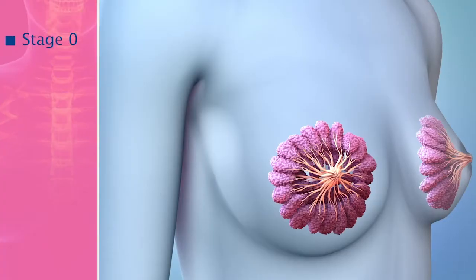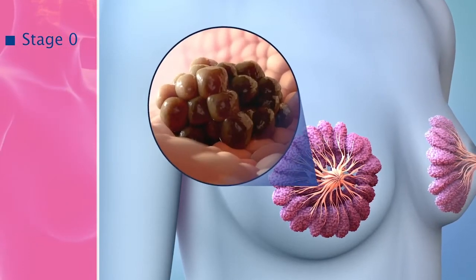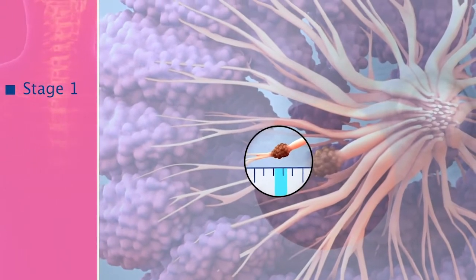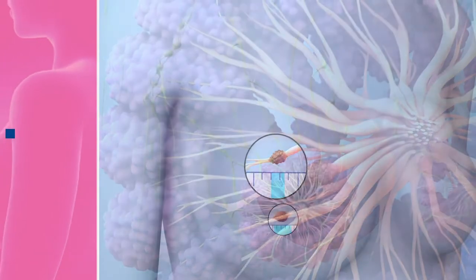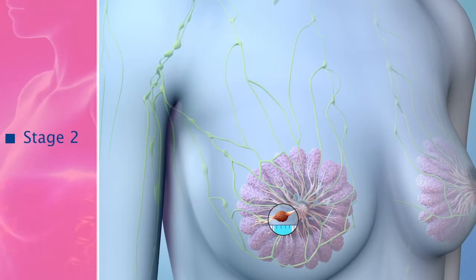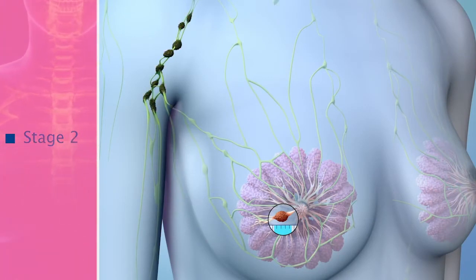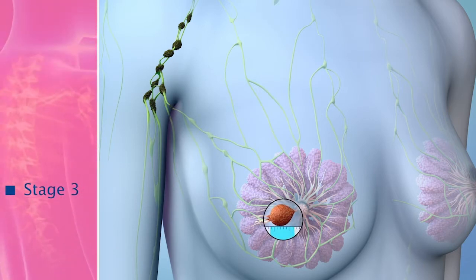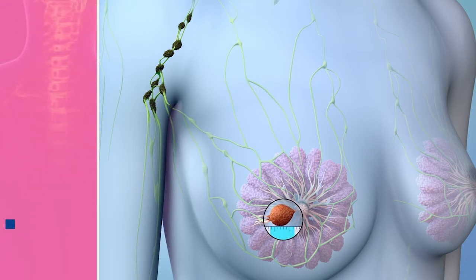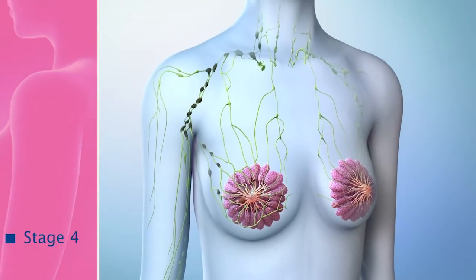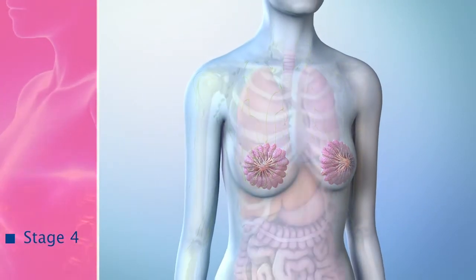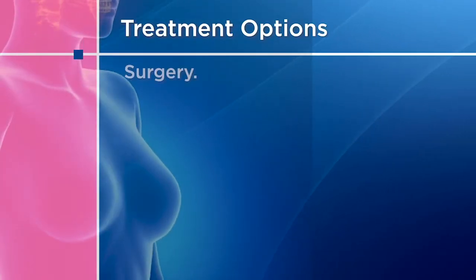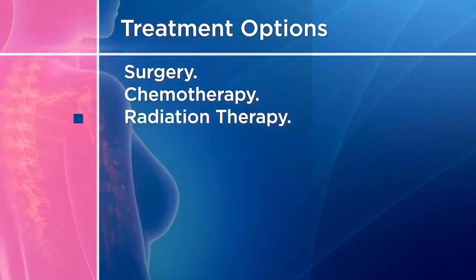Stage 0: the tumor is in the ducts or lobules. Stage 1: the tumor is less than 2 centimeters and may or may not have spread to the lymph nodes. Stage 2: the tumor is about 5 centimeters and has spread to 3 or more axillary lymph nodes. Stage 3: the tumor is larger than 5 centimeters and has spread to 3 or more axillary lymph nodes. Stage 4: the tumor has spread to other parts of the body such as the bones, lungs, or brain. Treatment options for breast cancer include surgery, chemotherapy, radiation therapy, hormone therapy, and targeted therapy.